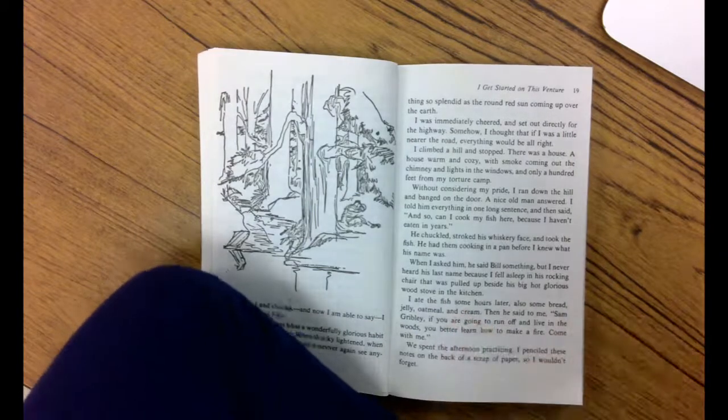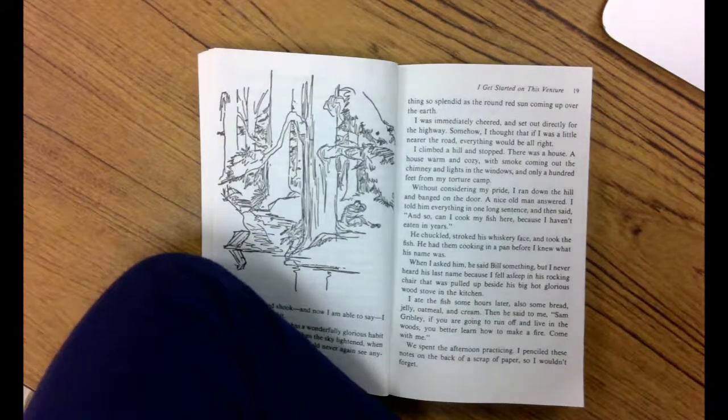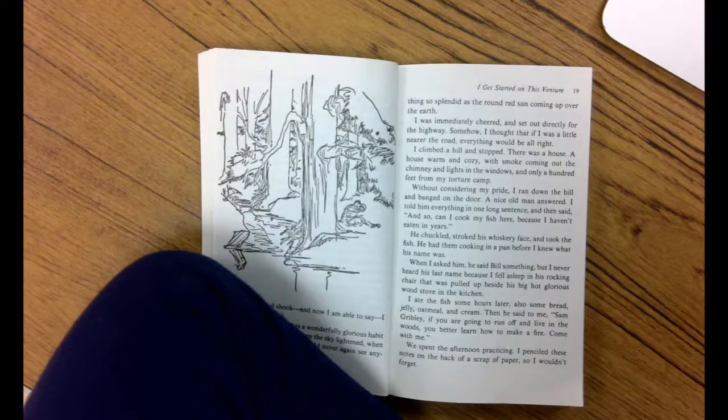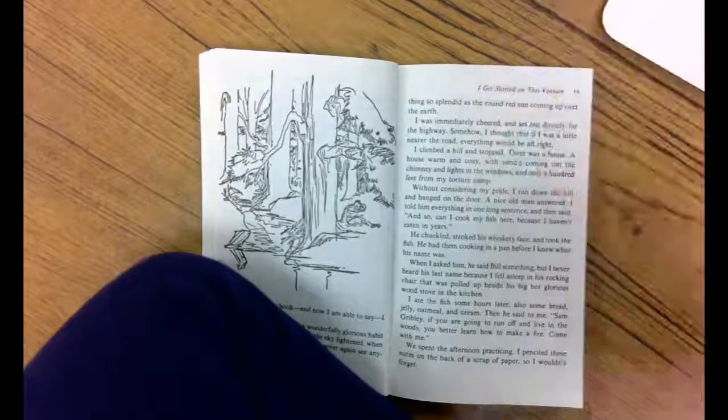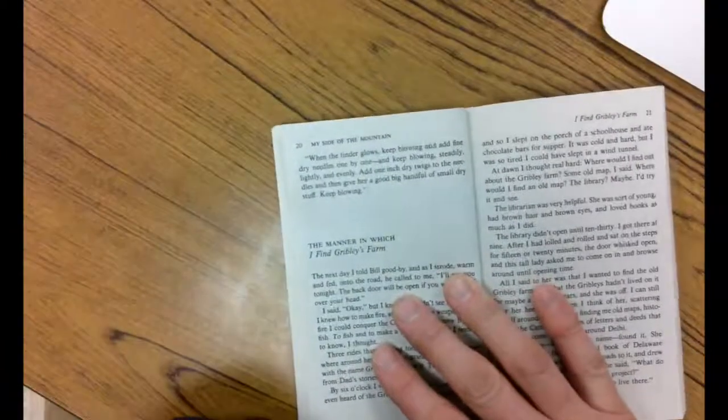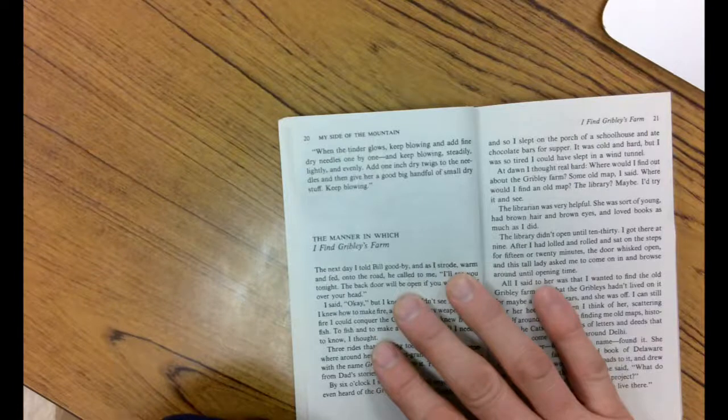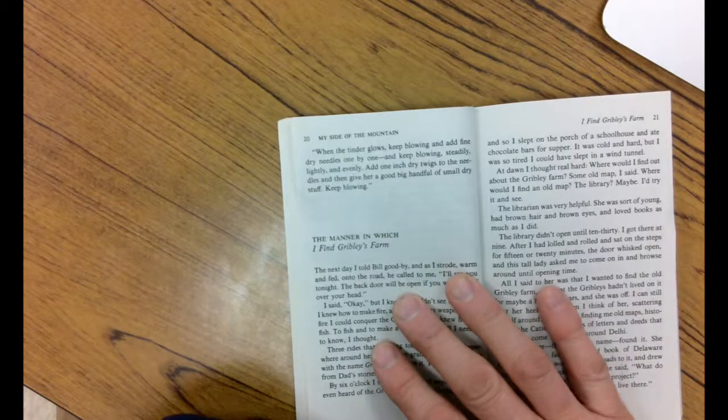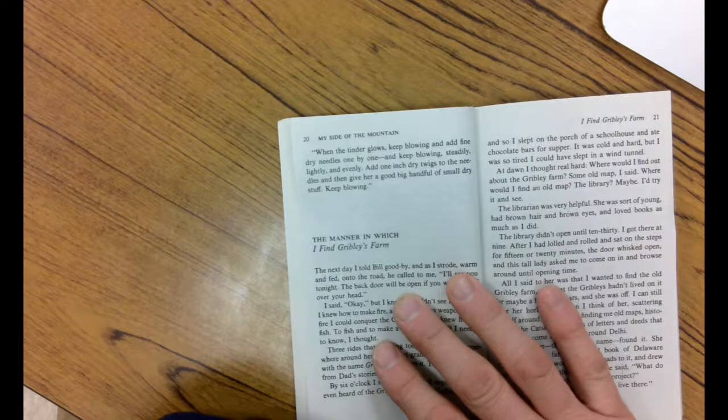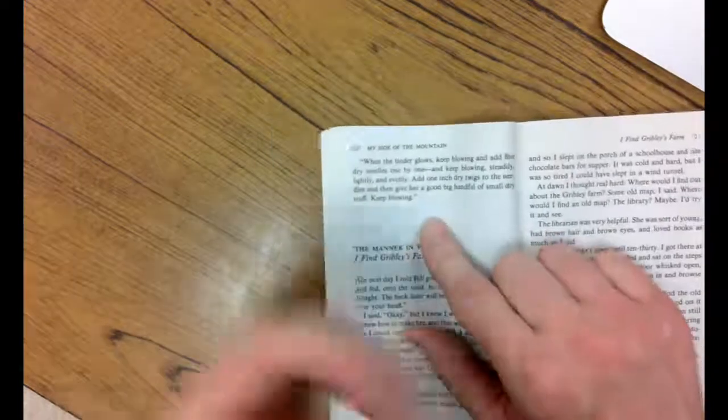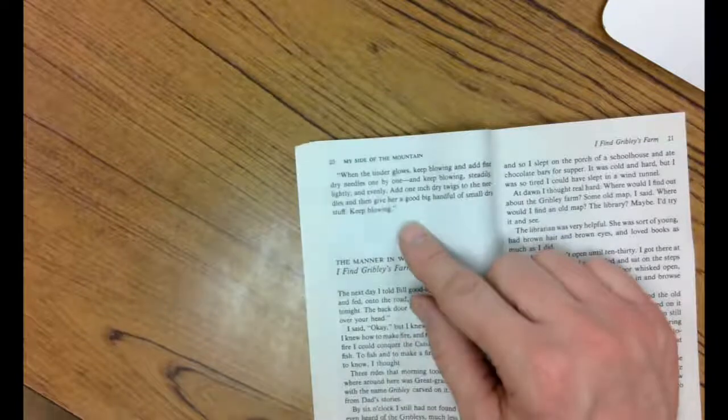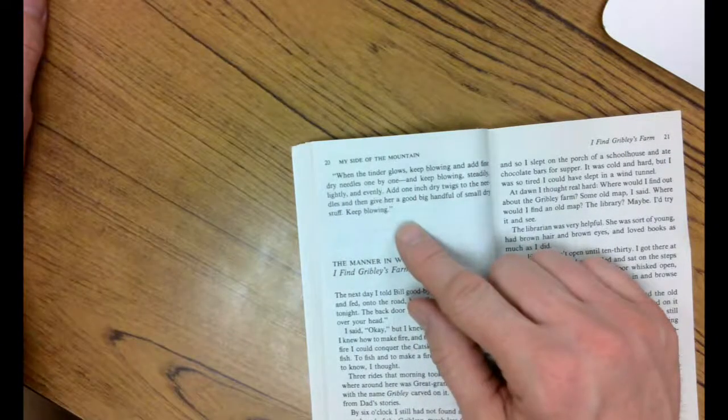Then he said to me, Sam Gribley, if you are going to run off and live in the woods, you better learn how to make a fire. Come with me. We spent the afternoon practicing. I penciled these notes on the back of a scrap of paper so I wouldn't forget. Boy, this man sure seems nice to help him get started like this. When the tinder glows, keep blowing and add fine, dry needles one by one and keep blowing steadily, lightly, evenly. Add one-inch dry twigs to the needles and then give her a good handful of small, dry stuff. Keep blowing. Now, when you blow on a fire, fires actually are like human beings. They need oxygen to live. And so when you blow on them, you're blowing the wind or the oxygen onto the fire that will help it burn.